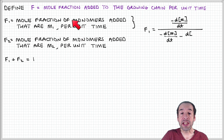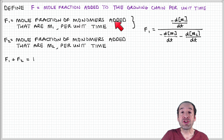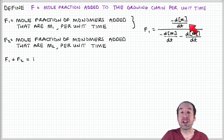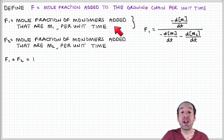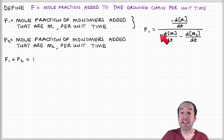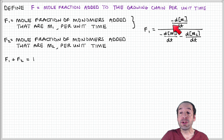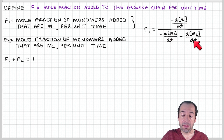We have expressions for these rates of change that we can use to obtain a relationship for F1. F1 is the rate at which monomer 1 is added to the growing chain, written in terms of the rates of change of monomers 1 and 2 in the reaction mixture. Note that M1 and M2 represent concentrations in the reaction mixture, whereas F1 and F2 refer to fractions in the copolymer. The rate of addition of monomer 1 into the copolymer equals minus the rate of change of M1 in the reaction mix, divided by the sum of the rate of change of M1 and M2 in the reaction mix.